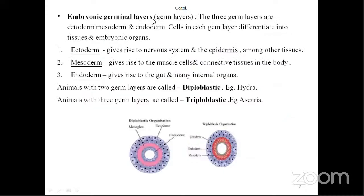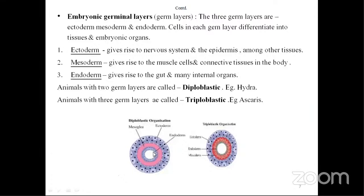Regarding germ layers: if two germinal layers are present (ectoderm and endoderm), it is known as diploblastic — example is Hydra. If three germ layers are present, it is triploblastic — ectoderm is present (bluish color), mesoderm (orange color), and endoderm (grayish color); inside is the lumen. Example is Ascaris. One example is more than sufficient. In diploblastic organization, only ectoderm and endoderm are present; the mesoderm is not seen — it appears in a non-cellular form known as mesoglea.